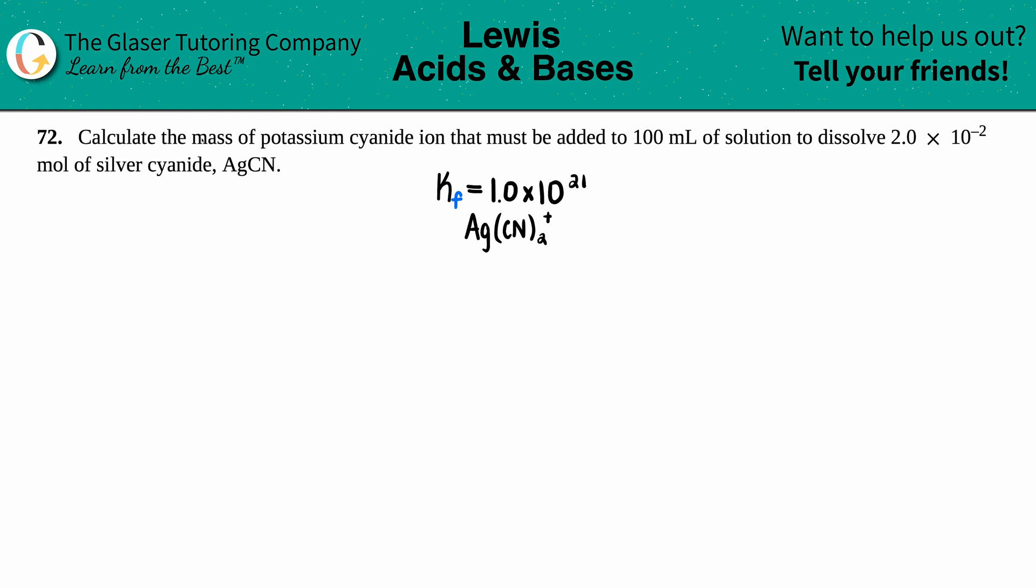Number 72: Calculate the mass of potassium cyanide ion that must be added to 100 milliliters of solution to dissolve 2.0 times 10 to the negative second moles of silver cyanide, which is AgCN.